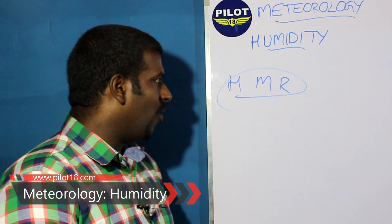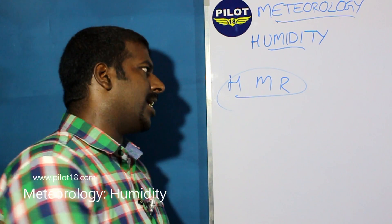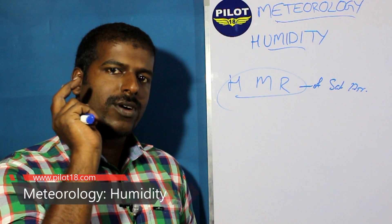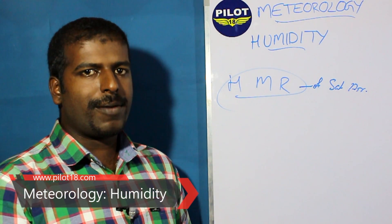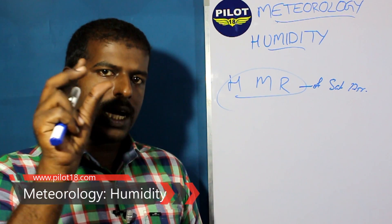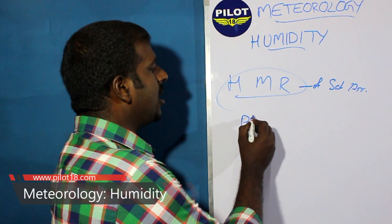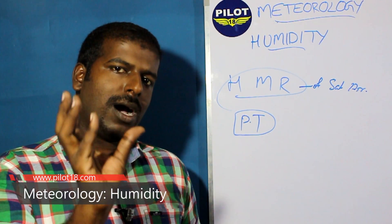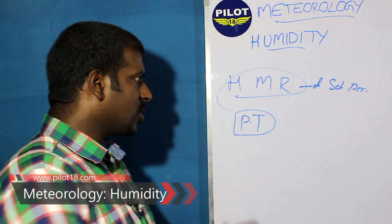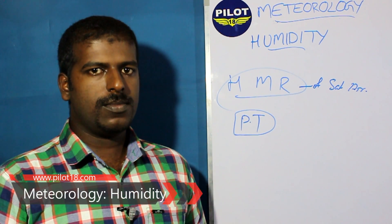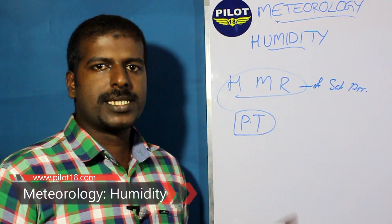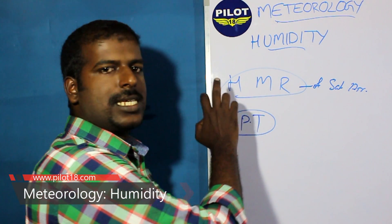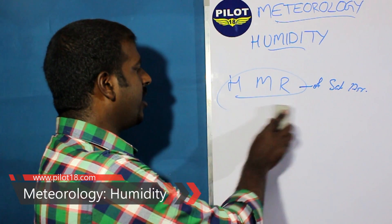The humidity mixing ratio of saturated air is the maximum mass of water vapor that air can hold at a given pressure and temperature — with pressure and temperature kept constant. That is called the humidity mixing ratio of saturated air, and it represents the maximum amount of water vapor the air can hold at those prescribed conditions.